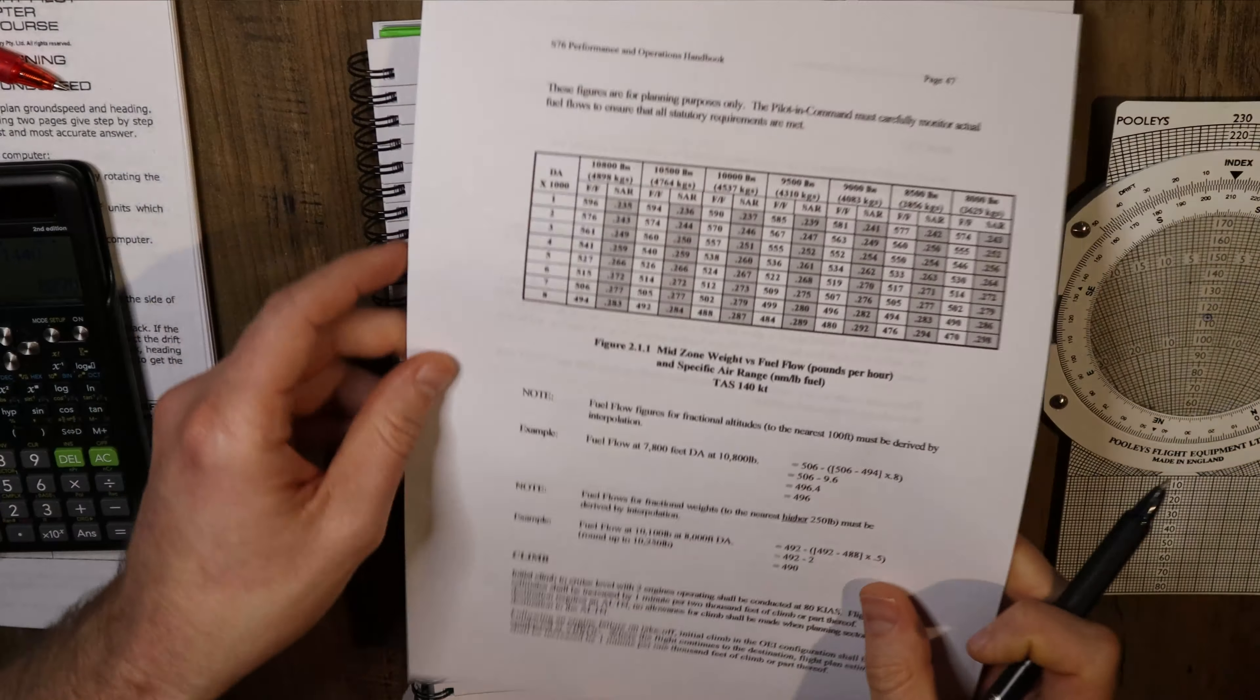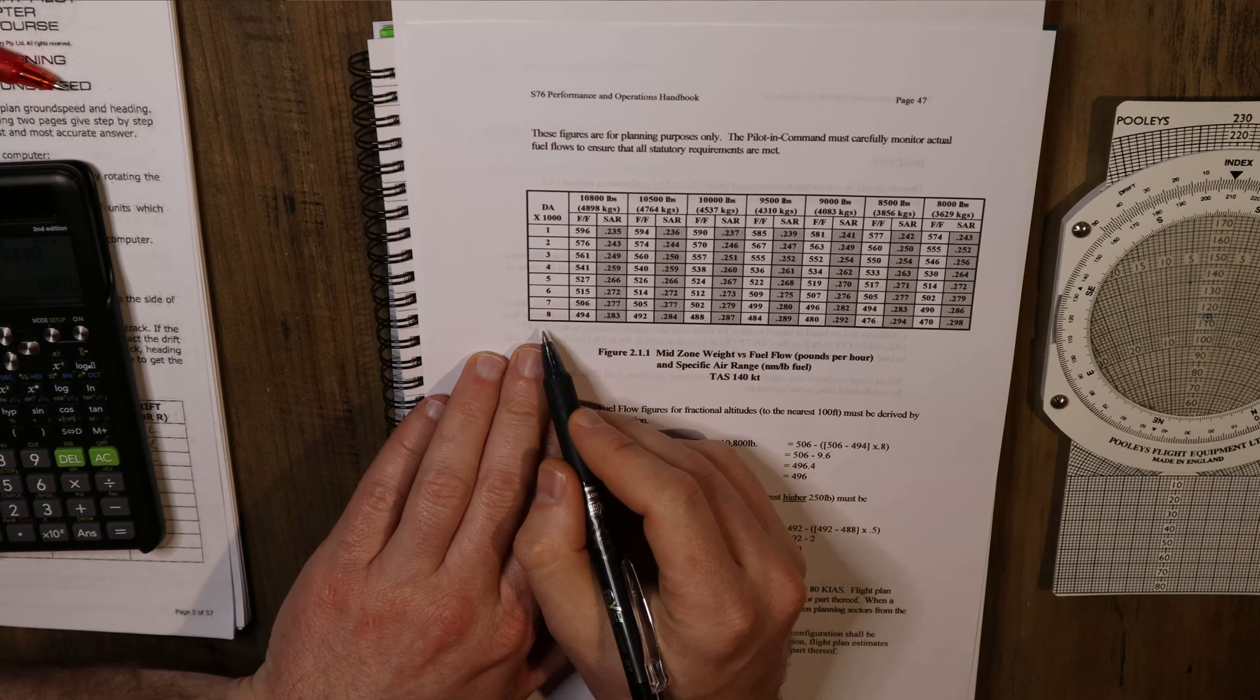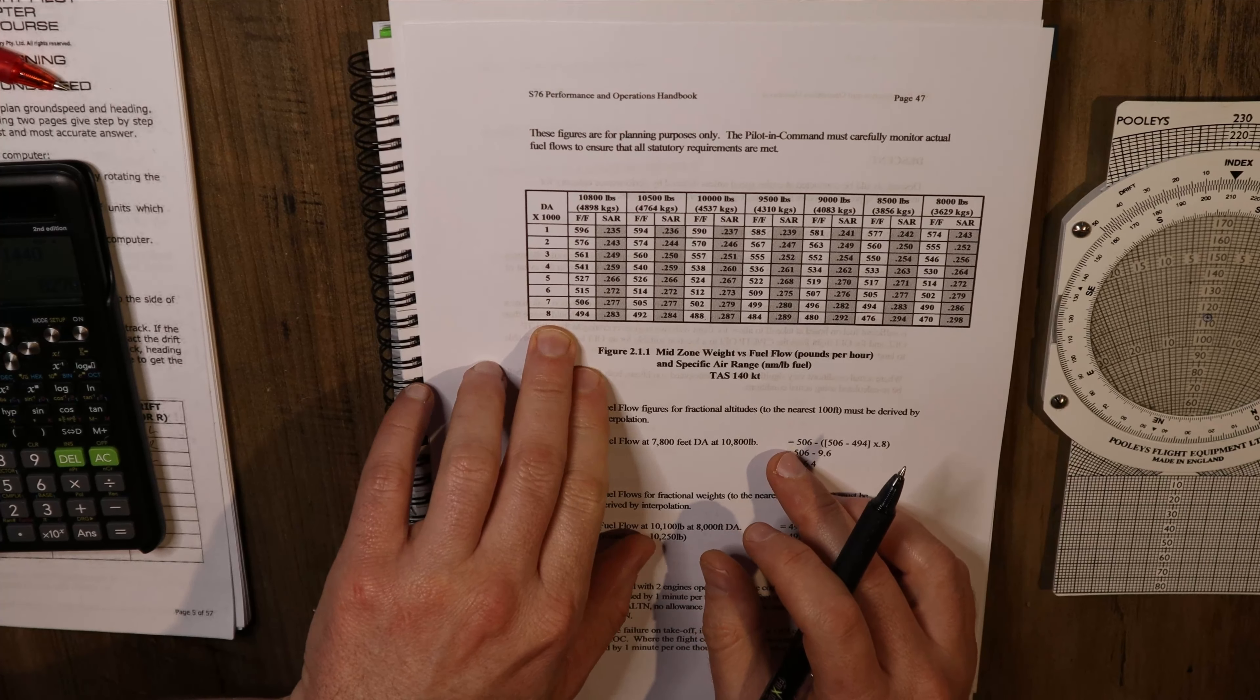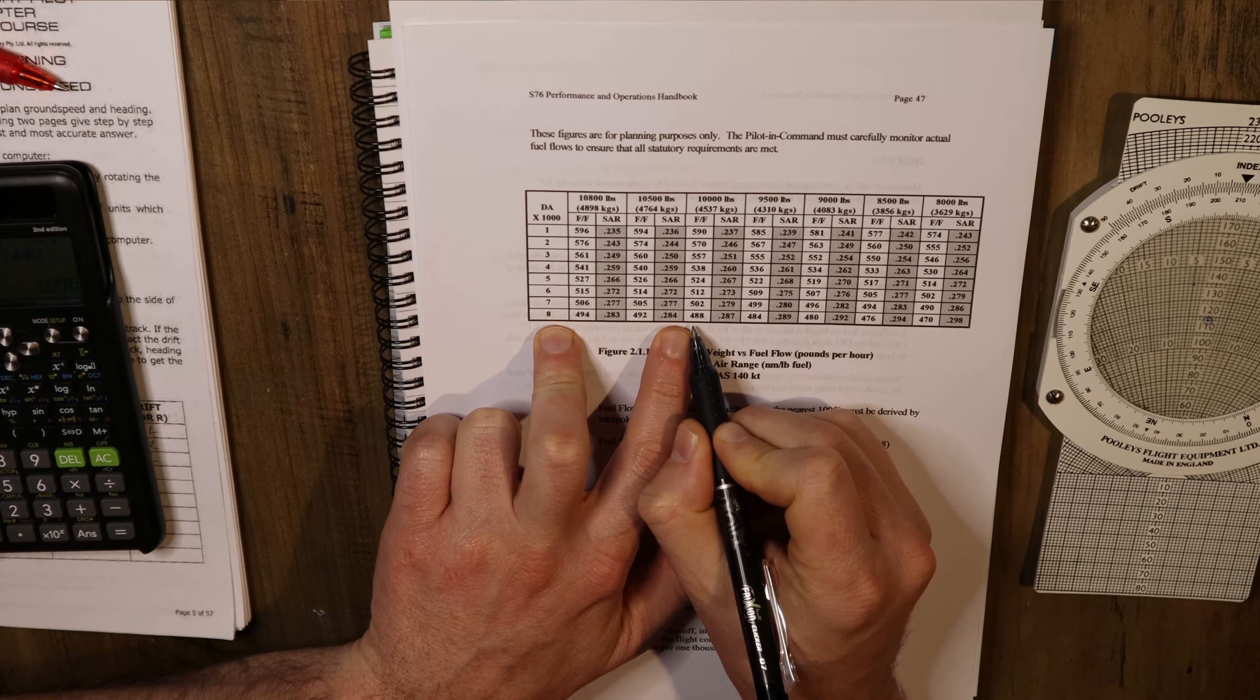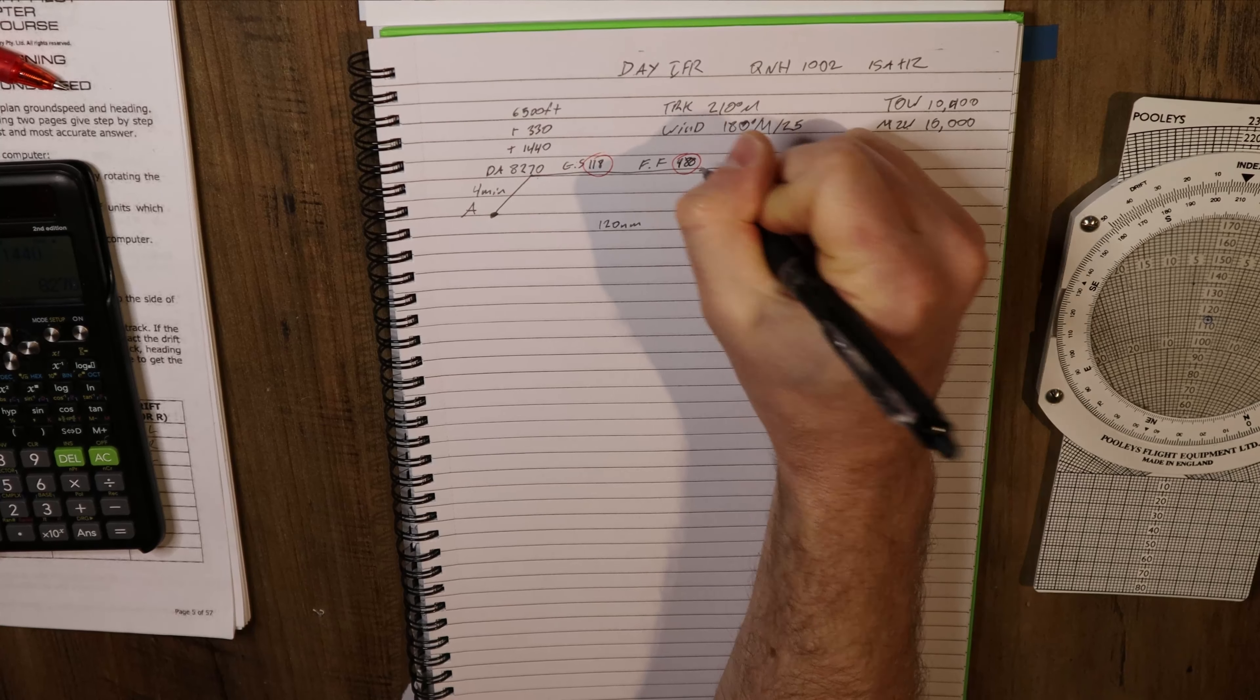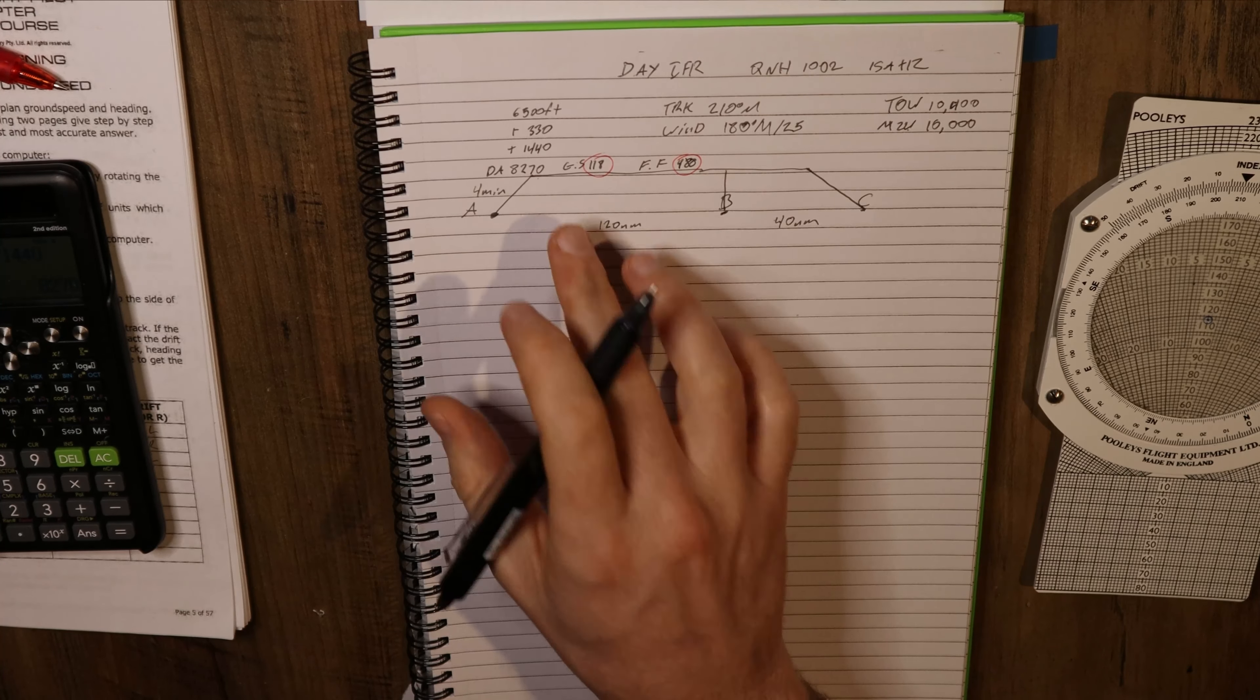We're going to come to our table. Anything that goes above 8000 feet, you're going to assume 8000 feet. It doesn't go above a DA of 8000. You don't have to interpolate above 8000, you just stop at 8000. So our maximum is going to be 8000 at 10,000 pounds. Our fuel flow for this trip is going to be 488 pounds. Now we have the information we need to start working out our fuel used on our flight plan.